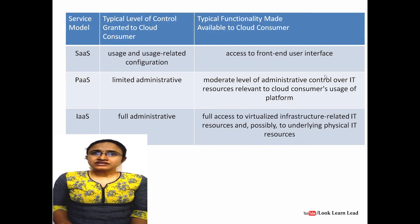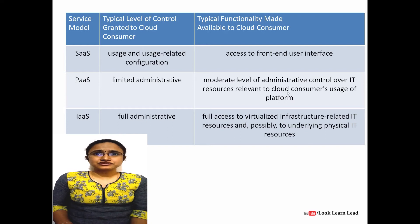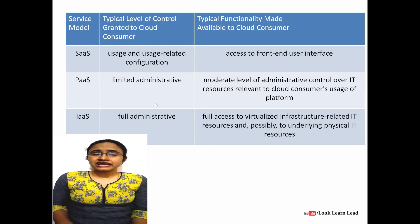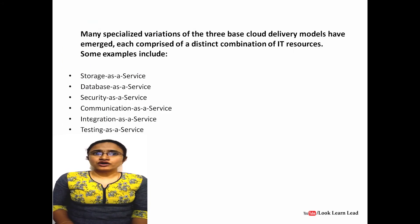To compare all three models: Software as a Service is used by end users and contains user and user-related configuration. Platform as a Service is used by programmers and has limited administrative facilities. Infrastructure as a Service has full administrative facilities and gives full access to virtualized infrastructure. These are the key differences between the three service models.